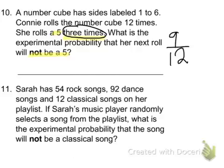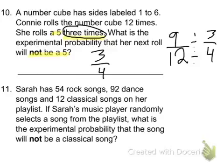Be careful here, because a lot of times you see that 5 and you think you're going to put that 5 on top. If you understand the question and mark it up like we did here, it's a lot easier to figure out. So here we have 9 over 12. Divide them both by 3 and you get three-fourths. So the answer is three-fourths.